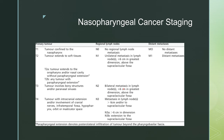For lymph nodes, the usual considerations apply: are there any abnormal lymph nodes? What is the size and location? And then the M staging, which refers to distant metastatic disease.